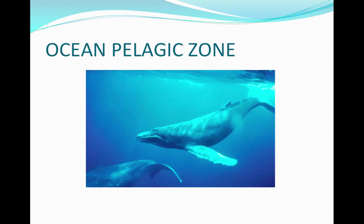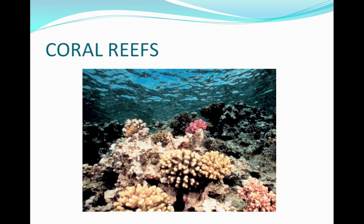The ocean pelagic zone is the open water covering 70% of the planet. It has a deep photic zone and a lot of oxygen, but not many nutrients. Overfishing and dumping by humans affects this zone. Coral reefs are formed by coral that produces calcium carbonate skeletons and contain a lot of biodiversity. Humans impact coral reefs by removing coral, through pollution, and through climate change, which is destroying many reefs.